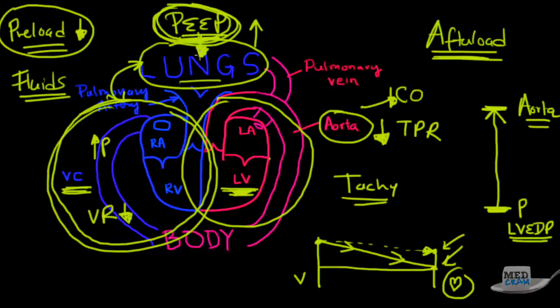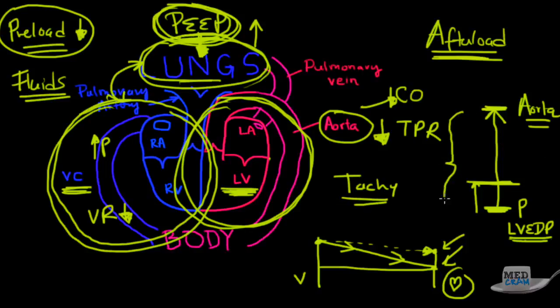Well, if I put PEEP on the patient, that means the lungs are going to be at a higher pressure, and because the left ventricle is sitting in there, that means now instead of the left ventricular end diastolic pressure being here, it's also going to be increased to this level. And as a result, the afterload, which used to be this, is now going to be this.